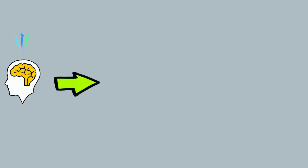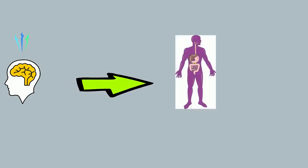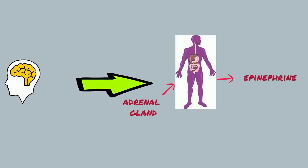Another pathway that occurs in adrenergic response is direct stimulation of the adrenal gland, resulting in release of epinephrine. Epinephrine is the body's form of adrenaline.